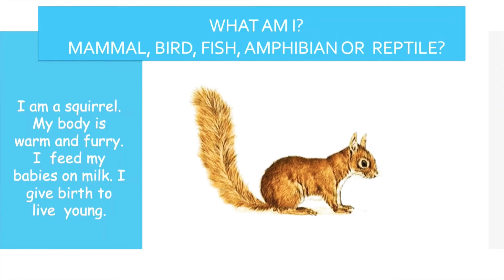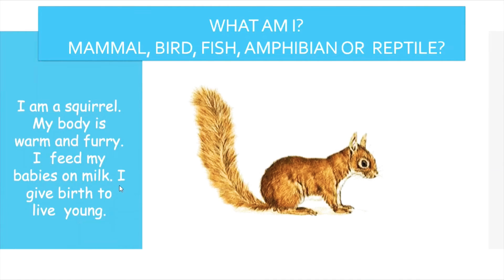I am a squirrel. My body is warm and furry. I feed my babies on milk and I give birth to live young. Can you guess which animal I am — mammal, bird, fish, amphibian, or reptile? The clue is: I feed my babies on milk and give birth to live young. That means a squirrel is a mammal.